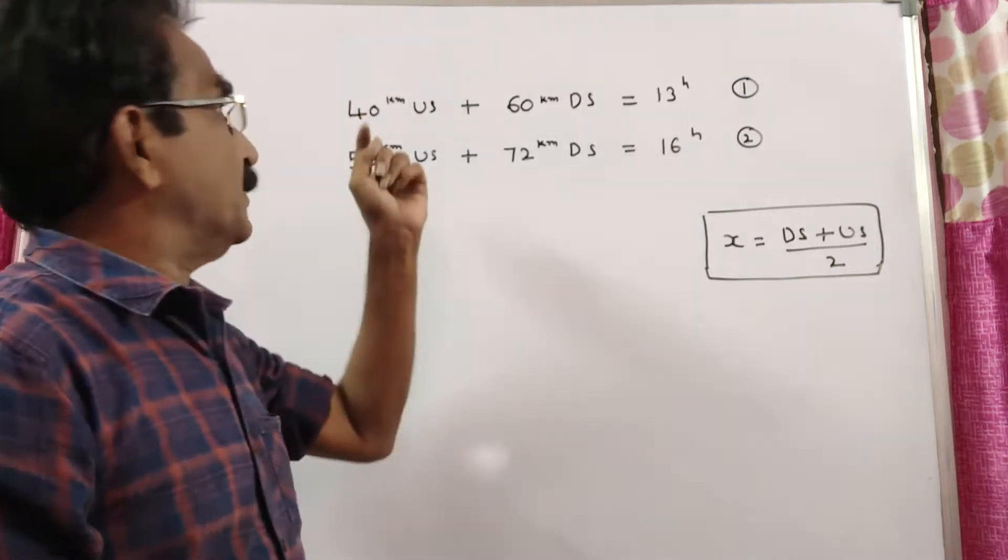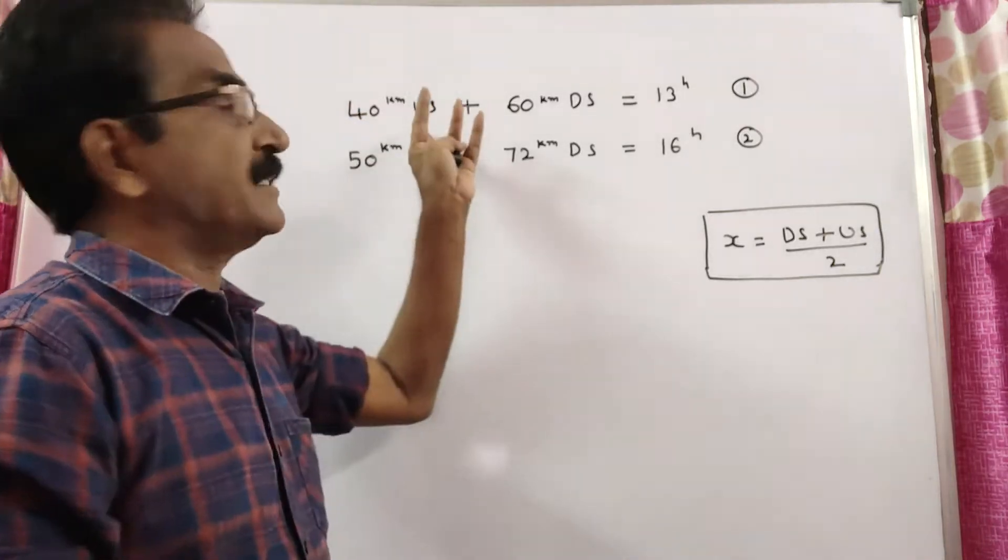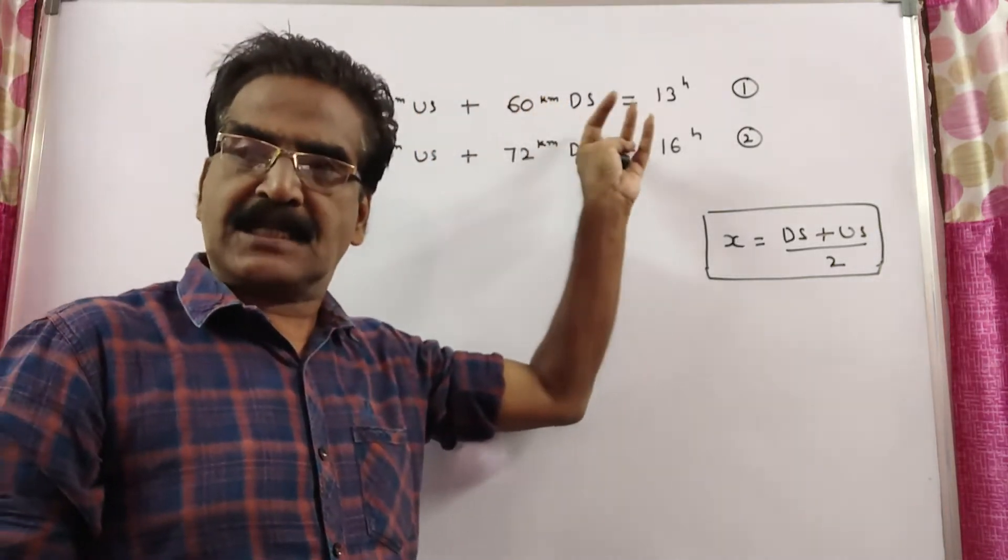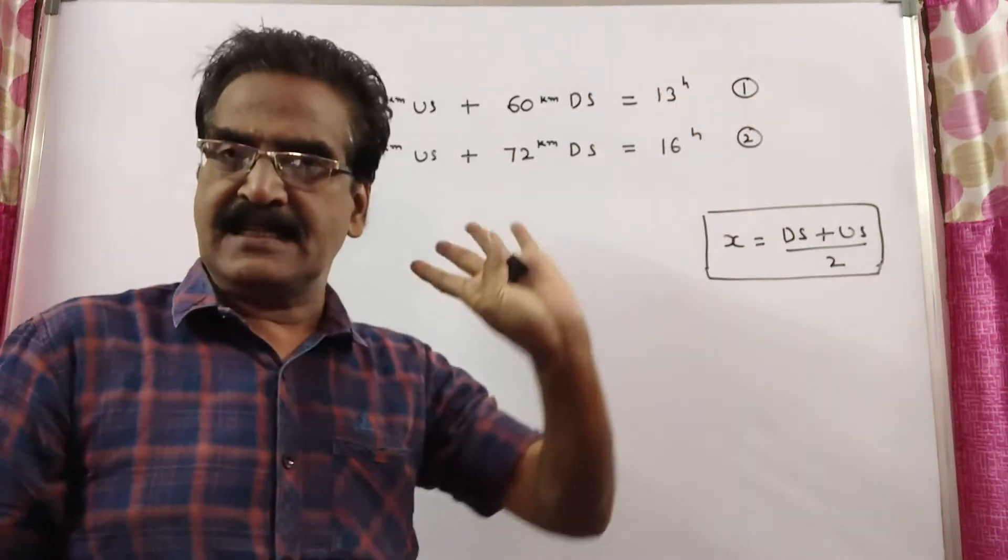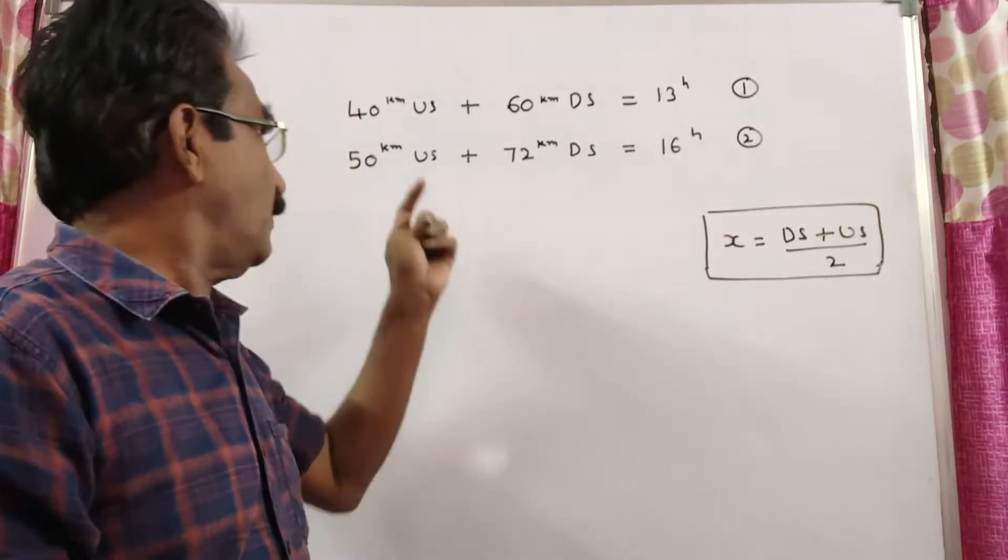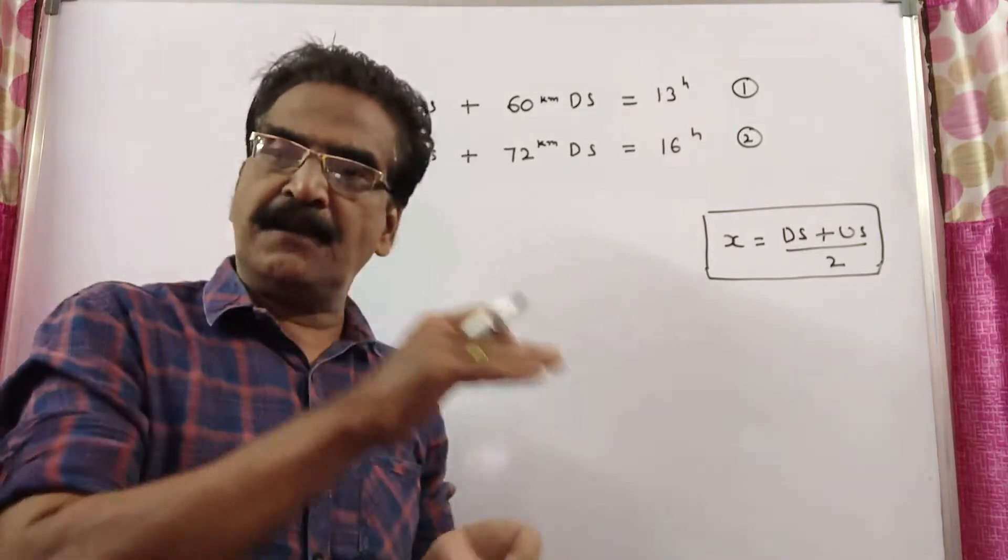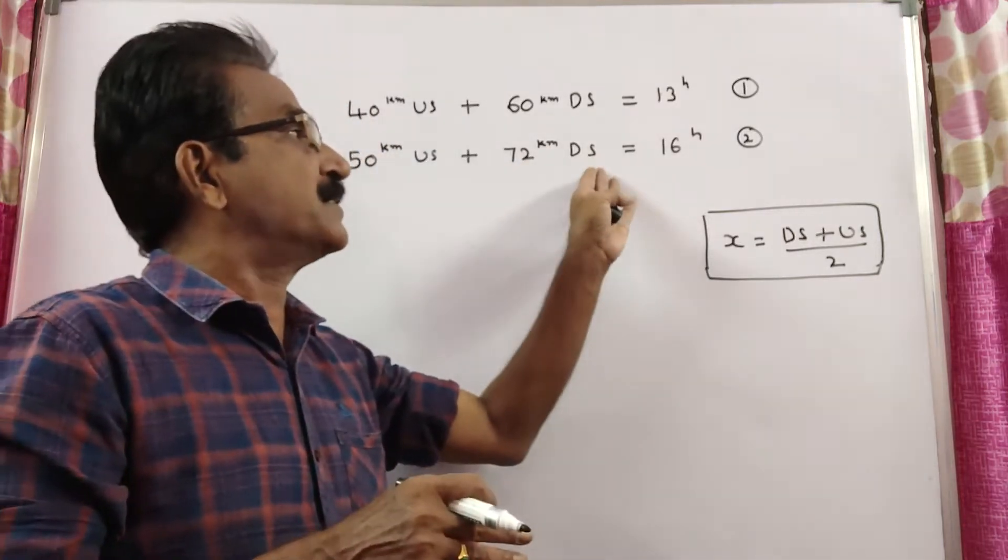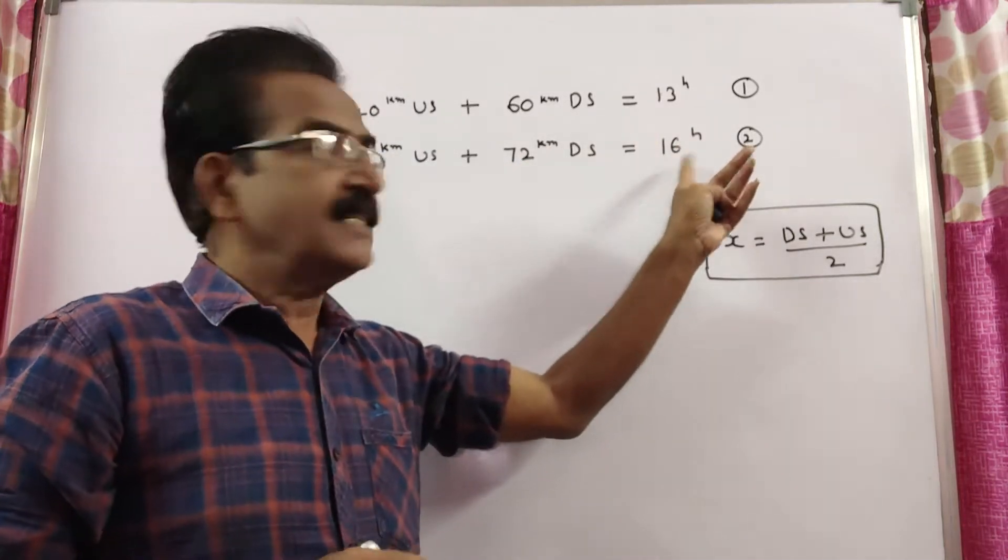See friends, a motor boat travels 40 km upstream and 60 km downstream in 13 hours. And the same motor boat travels 50 km upstream and 72 km downstream in 16 hours.